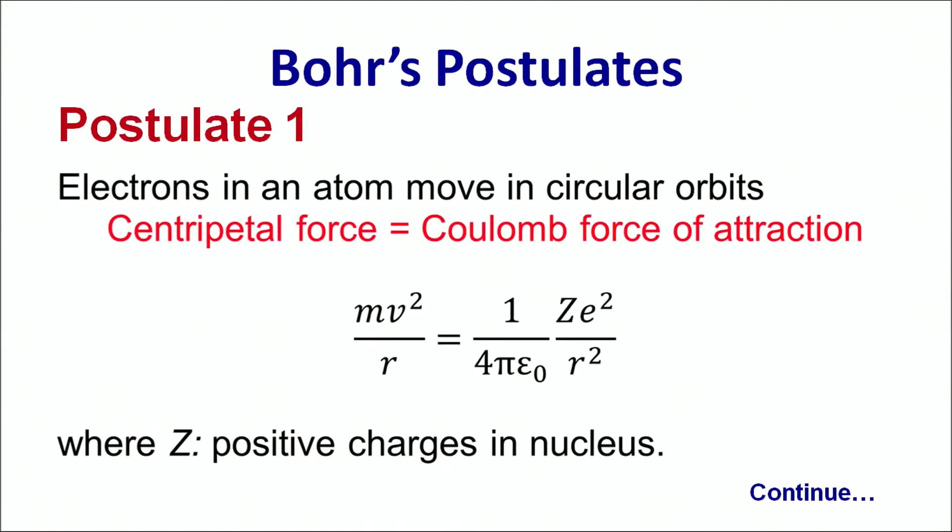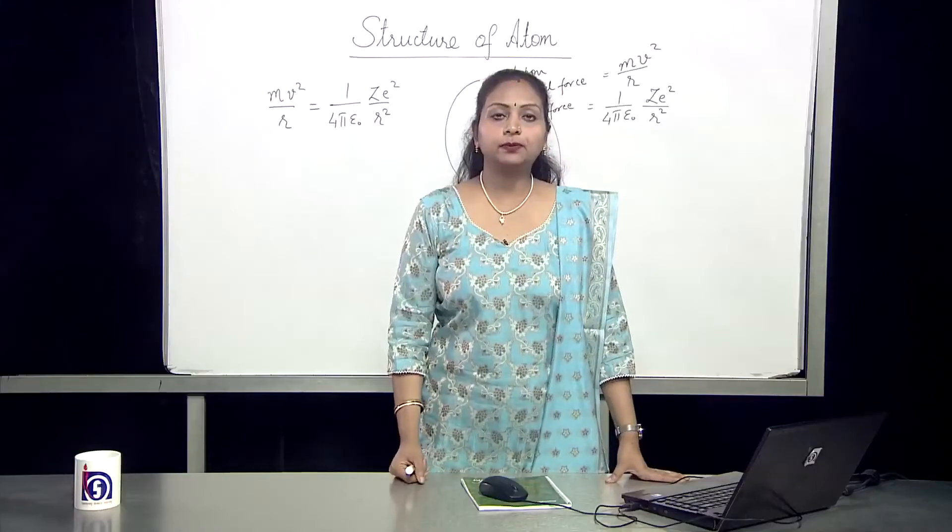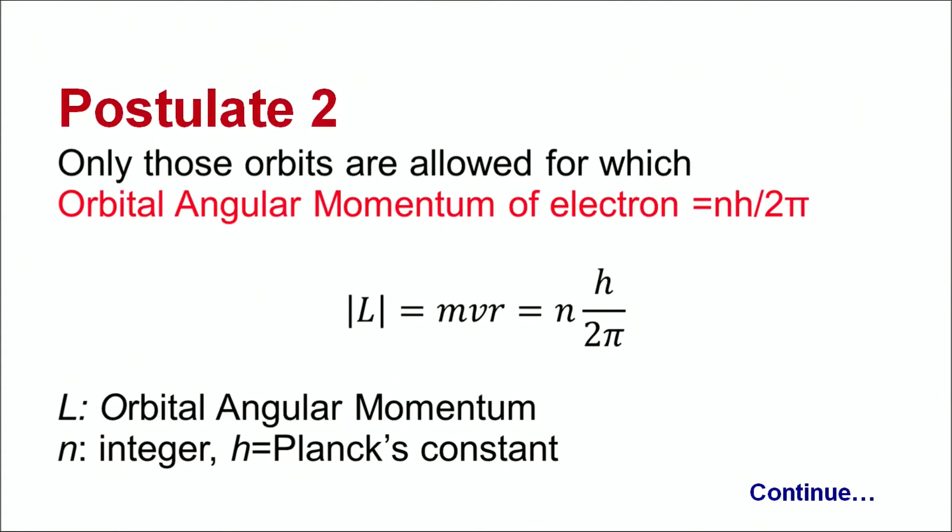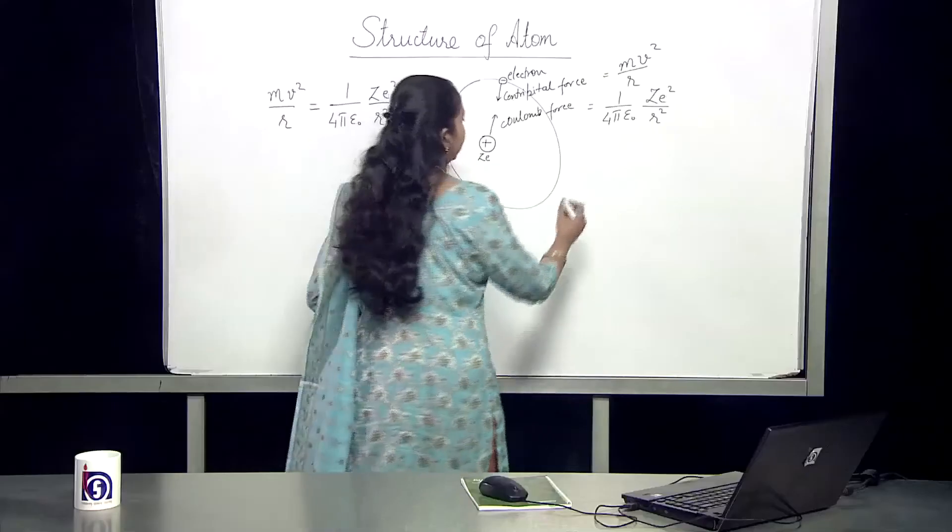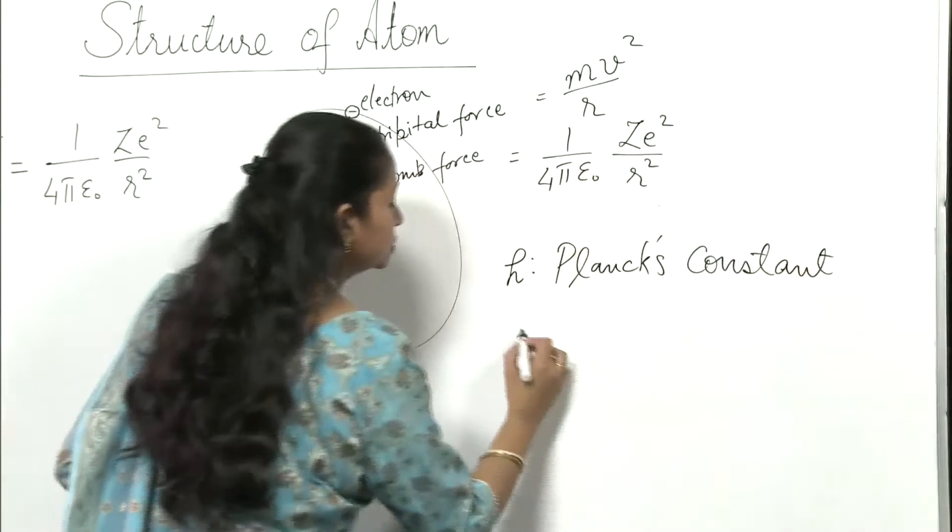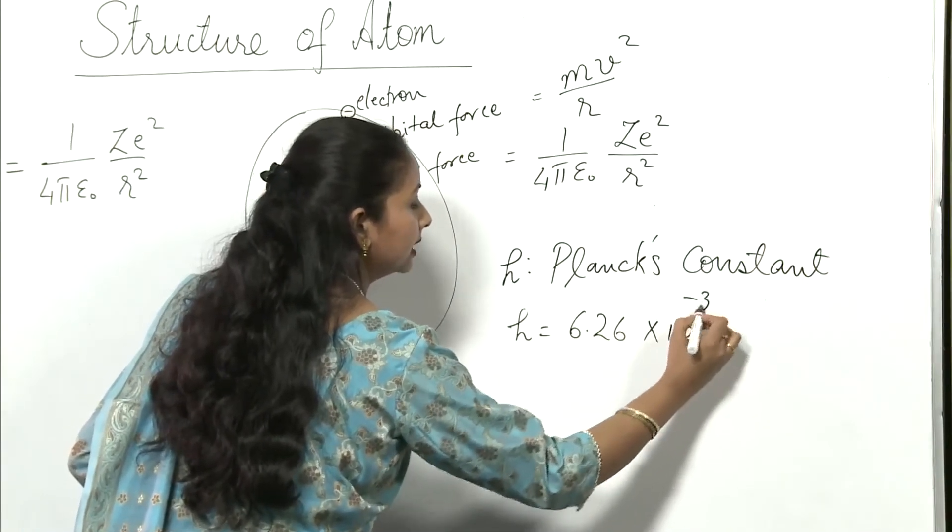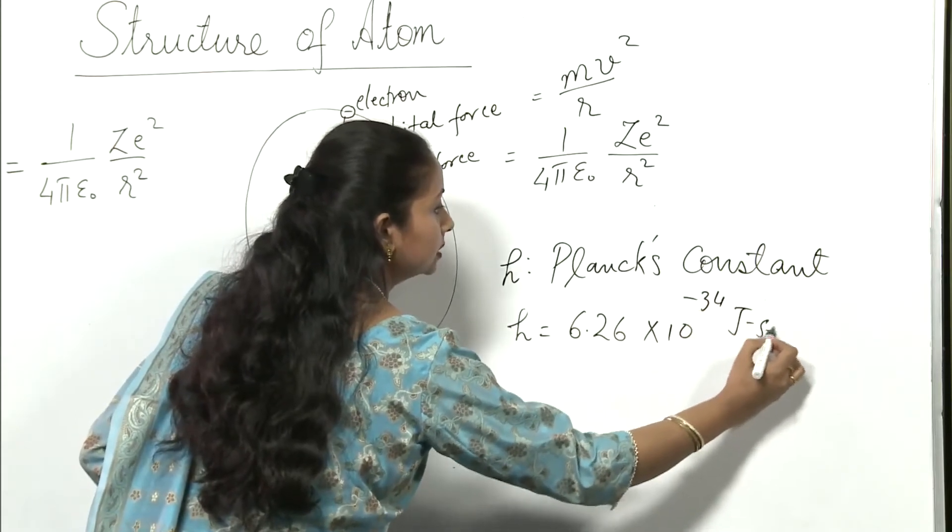The second postulate says that only those orbits are allowed for which the orbital angular momentum of the electron is integral multiple of h/2π. Now what is h? h is Planck's constant whose value is 6.26 × 10⁻³⁴ joule second.